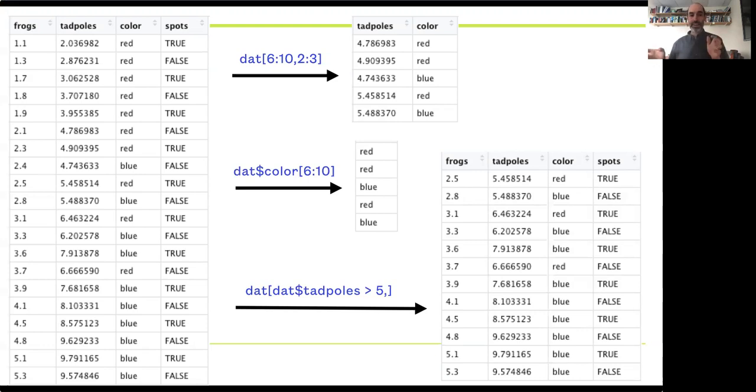So I could have said comma and then quoting like color. So if I put color in quotes as a string, that would know that that's the column I want.